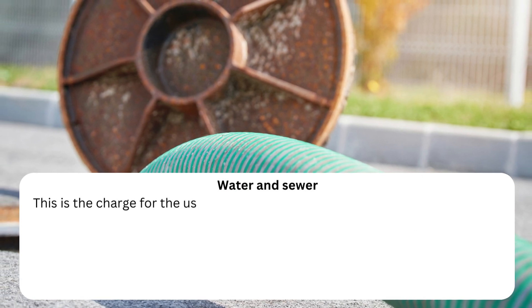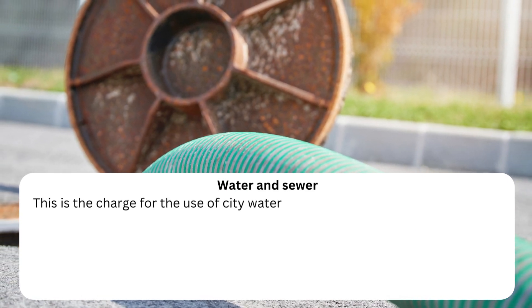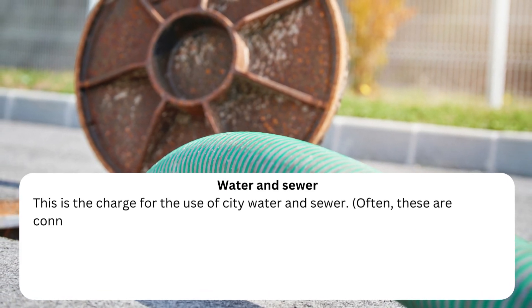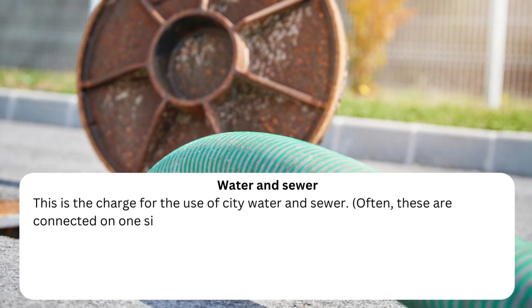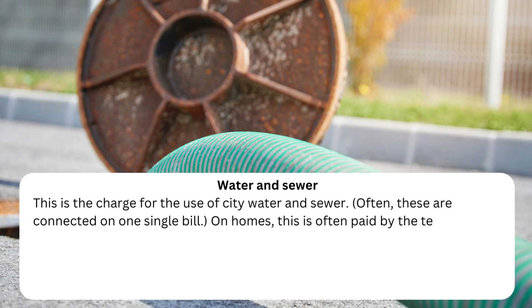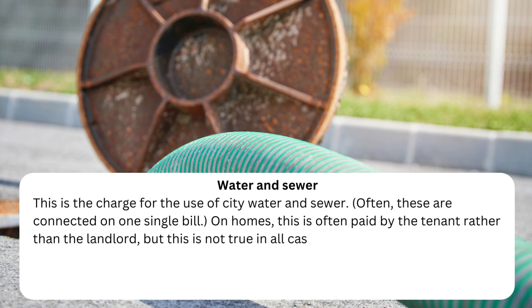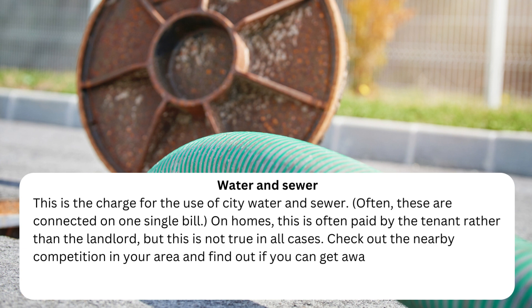Water and Sewer: This is the charge for the use of city water and sewer. Often these are connected on one single bill. On homes, this is often paid by the tenant rather than the landlord, but this is not true in all cases. Check out the nearby competition in your area and find out if you can get away with offsetting this charge to the tenant.